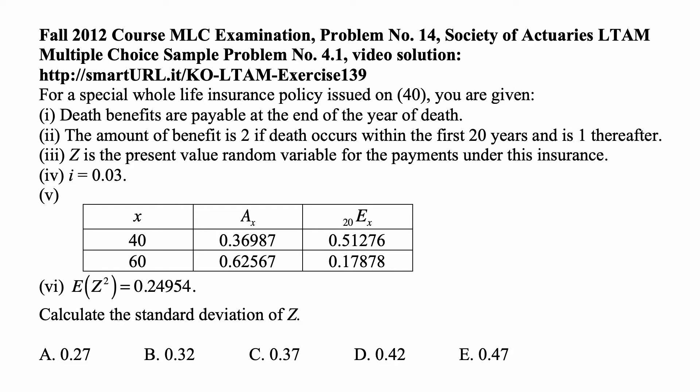Also, you are given the actual present value of whole life insurance at age 40, a 20-year pure endowment at age 40, and the same values for age 60. Also, the second moment of the random variable Z is equal to 0.24954. Calculate the standard deviation of Z.